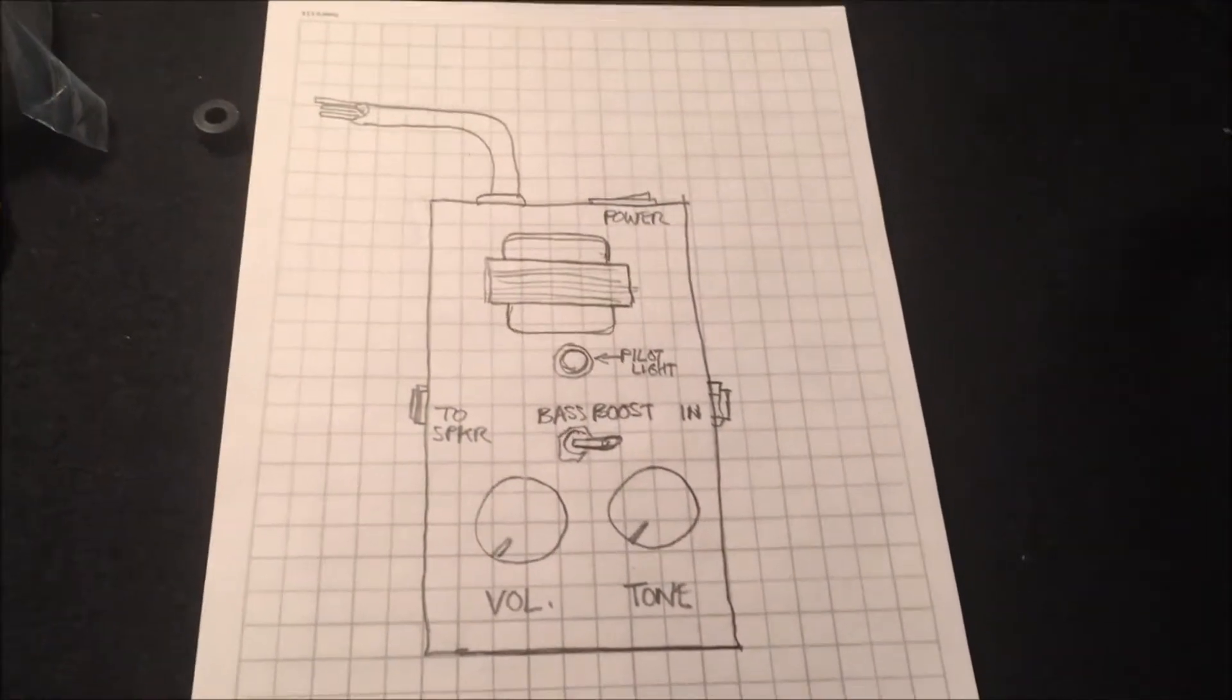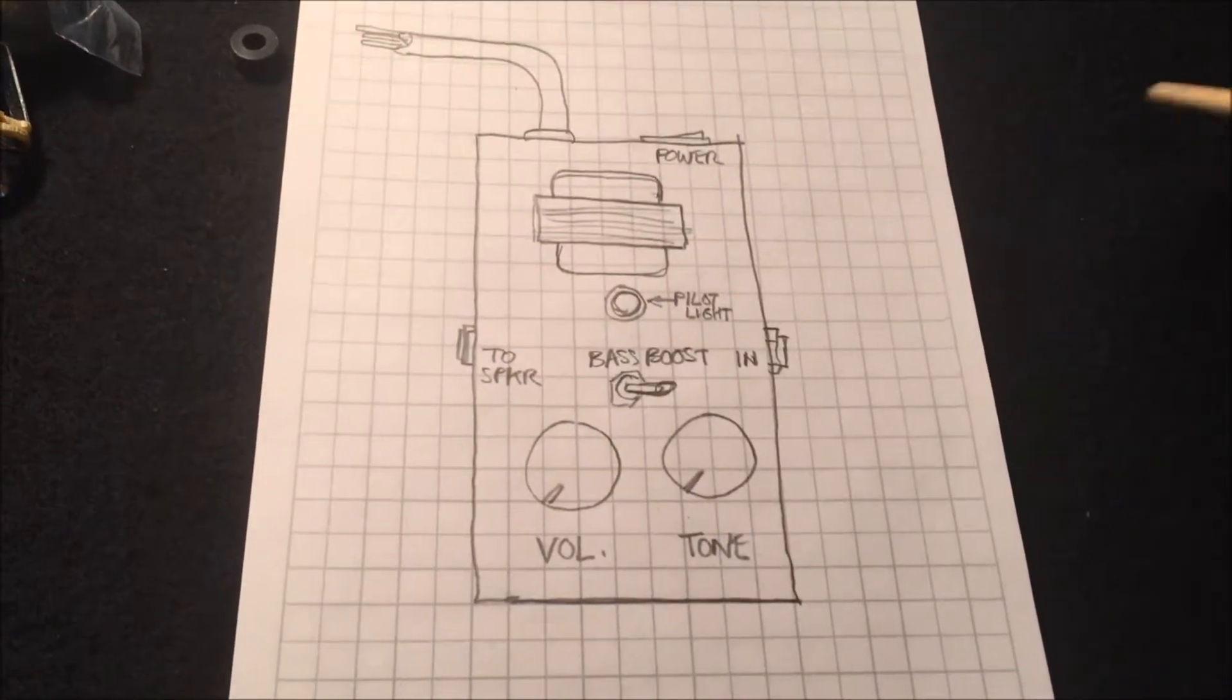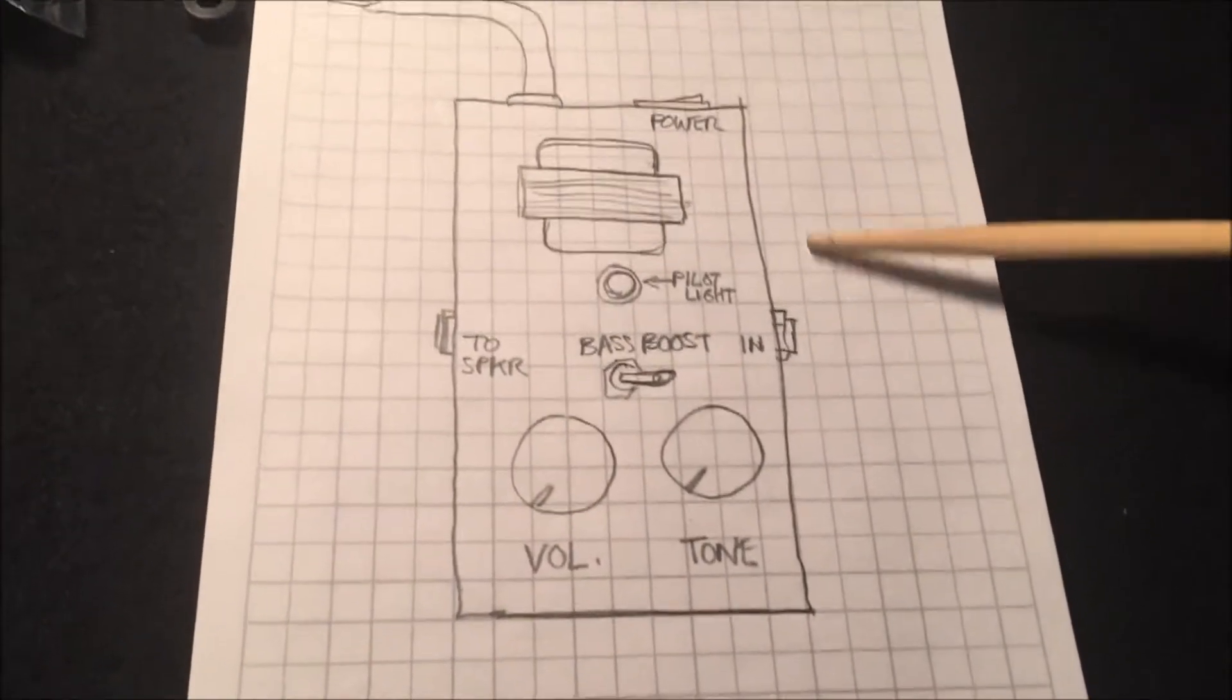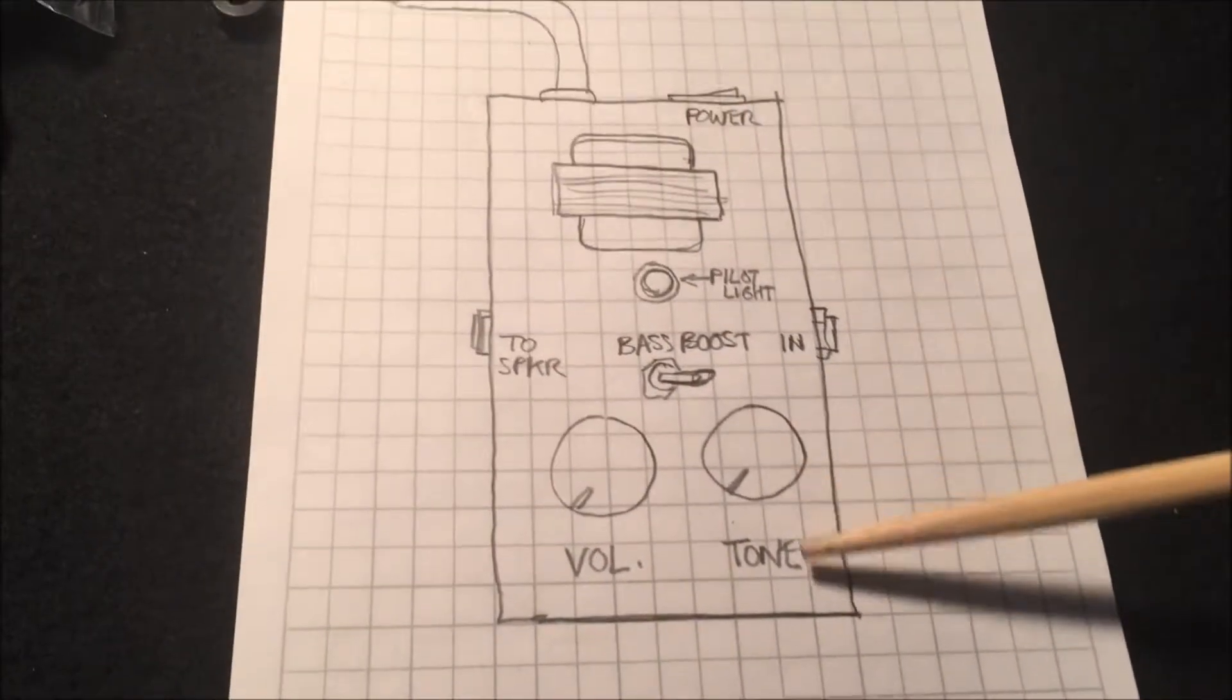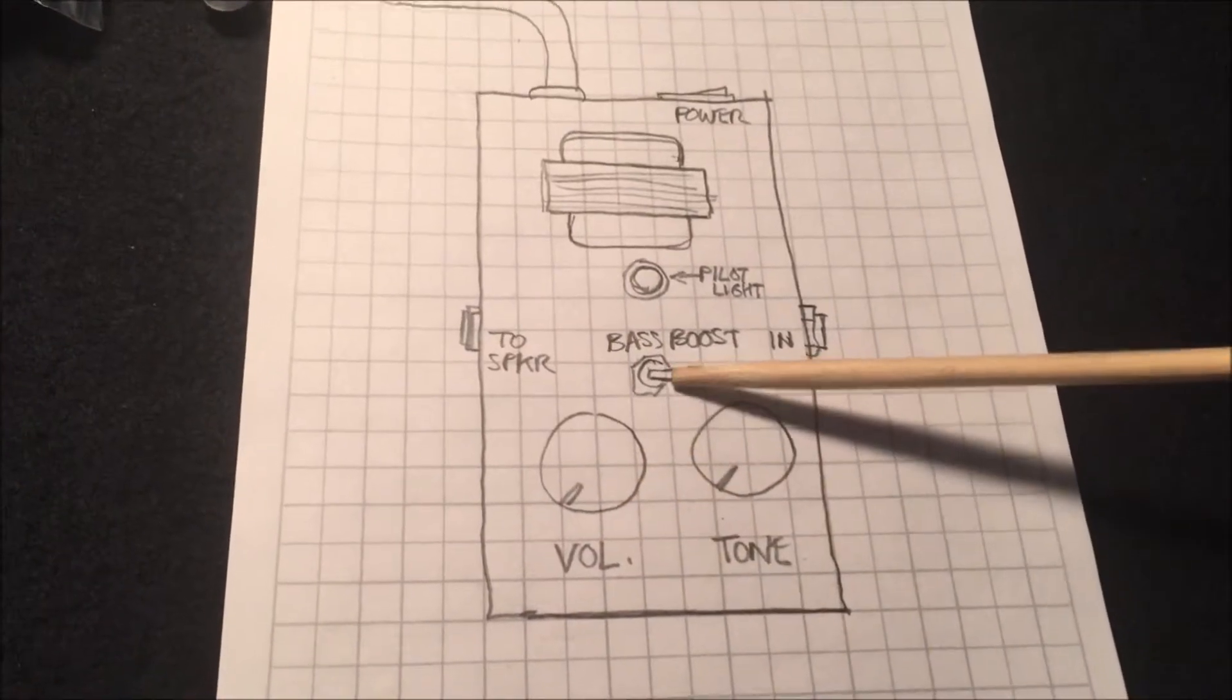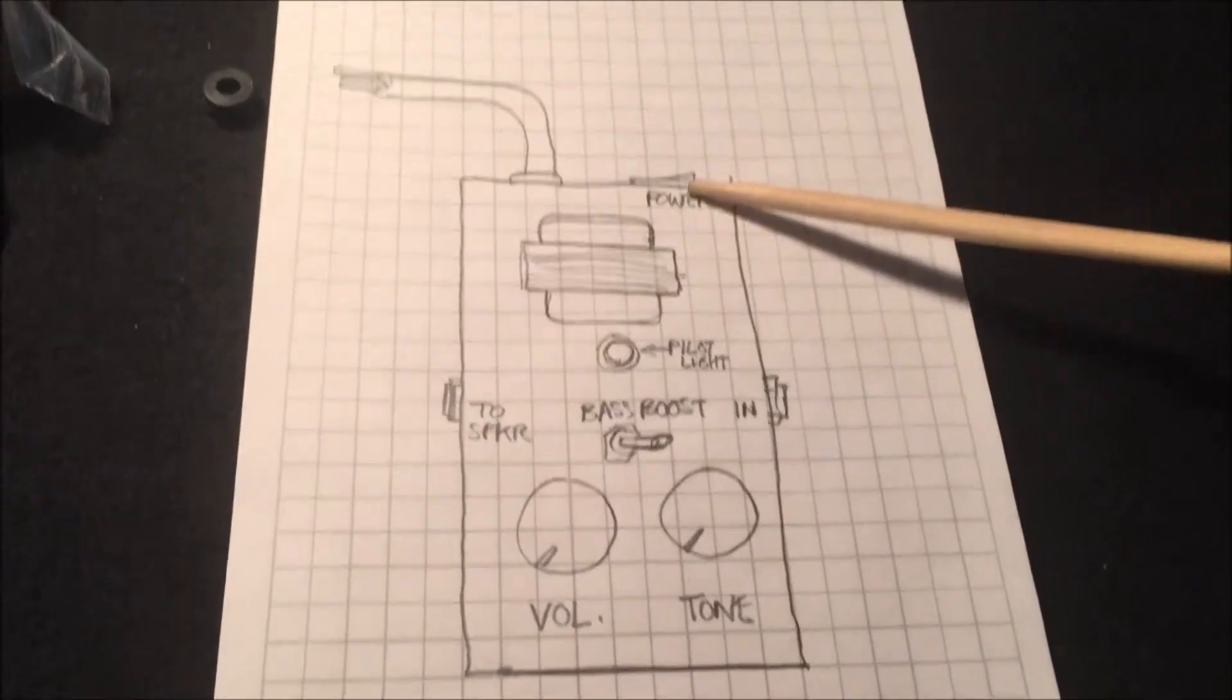This morning I had an idea to take the Little Gem Mark 2 and make it a little standalone box, kind of like how it was intended to be. I thought to put it in a 125 size enclosure and stick a couple controls here with the transformer mounted on top.